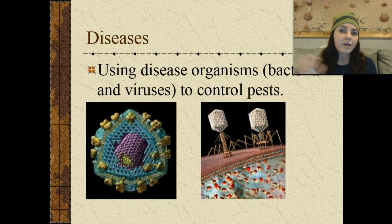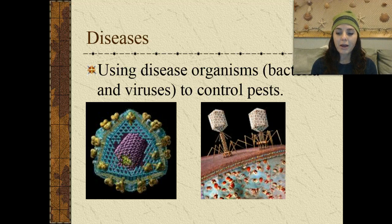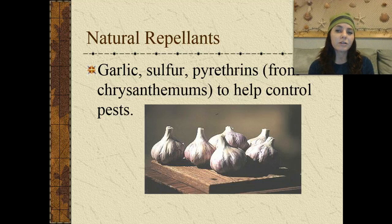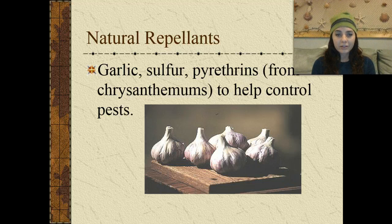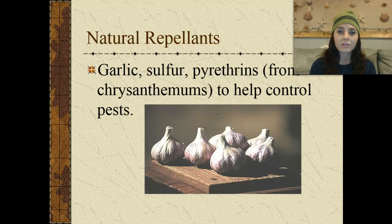We can also introduce disease, or use diseased organisms such as bacteria and viruses to control pests. We can use natural repellents such as garlic, sulfur, or pyrethrins, which come from chrysanthemums, to help control pests as well.